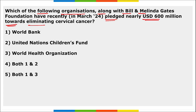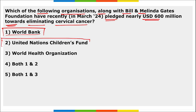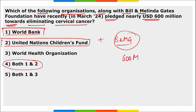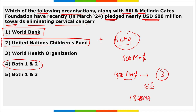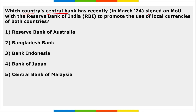Next: which organizations along with the Bill and Melinda Gates Foundation have recently pledged nearly 600 million dollars towards eliminating cervical cancer? It is the World Bank and UNICEF. These two organizations, along with the Bill and Melinda Gates Foundation, pledged nearly 600 million dollars. The funding includes 400 million dollars over three years by the World Bank and 180 million dollars from the Bill and Melinda Gates Foundation.